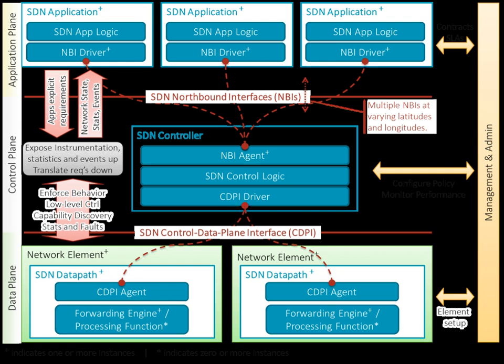SDN is agile: abstracting control from forwarding lets administrators dynamically adjust network-wide traffic flow to meet changing needs. It is centrally managed: network intelligence is centralized in software-based SDN controllers that maintain a global view of the network, appearing to applications and policy engines as a single logical switch. SDN is programmatically configured, letting network managers configure, manage, secure, and optimize resources quickly via dynamic, automated SDN programs that do not depend on proprietary software. When implemented through open standards, SDN simplifies network design because instructions are provided by SDN controllers instead of multiple vendor-specific devices and protocols.